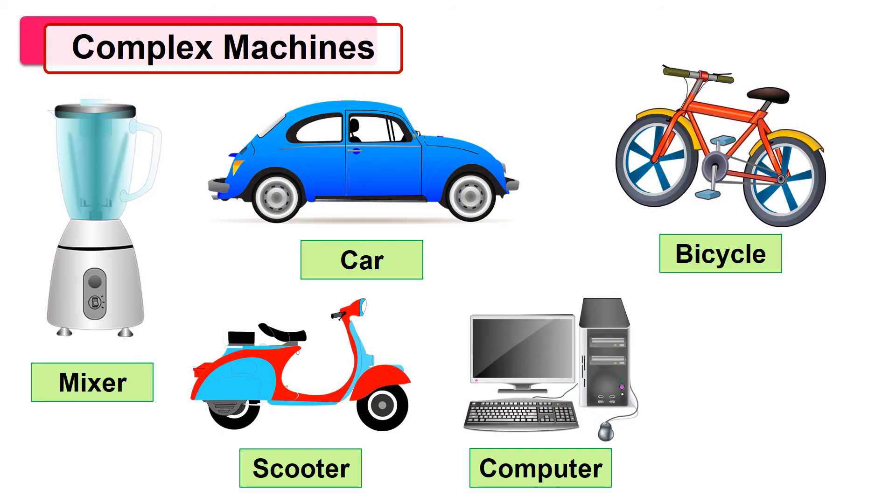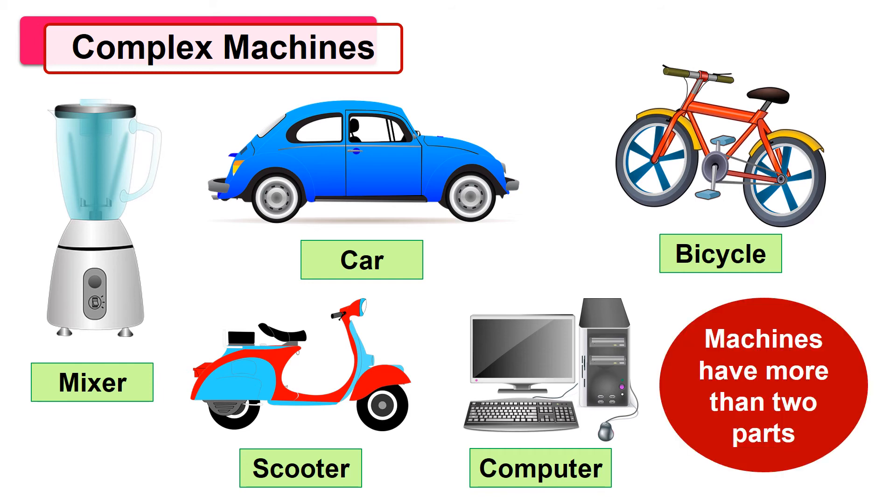Now the second type of machines is complex machines. Let's study complex machines. Observe the machines shown in the pictures. For what purposes are they used? We use all types of vehicles like car, scooter, bicycle to go from one place to another place. You might have seen that your mother uses a mixer in the kitchen while cooking. We use a computer in school, colleges, and offices for work. If we observe these pictures, we can see these machines are composed of many parts which carry out many processes for completing a task, and for this purpose, the parts are joined to one another. But what do we call such machines? Such machines are called complex machines.